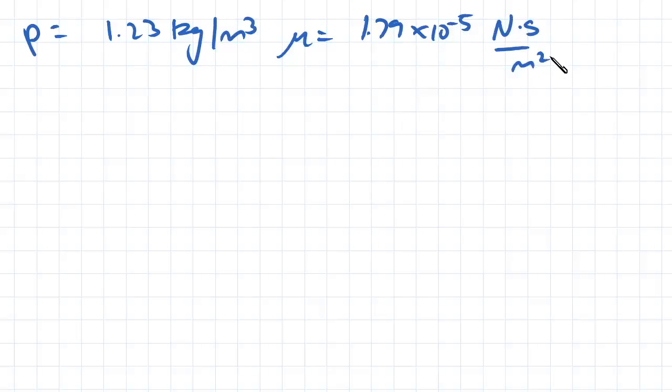So the density is equal to 1.23 kilograms per meter cubed. And our viscosity is equal to 1.79 times 10 to the negative 5 newtons seconds per meter squared. So these are quantities that you should know.